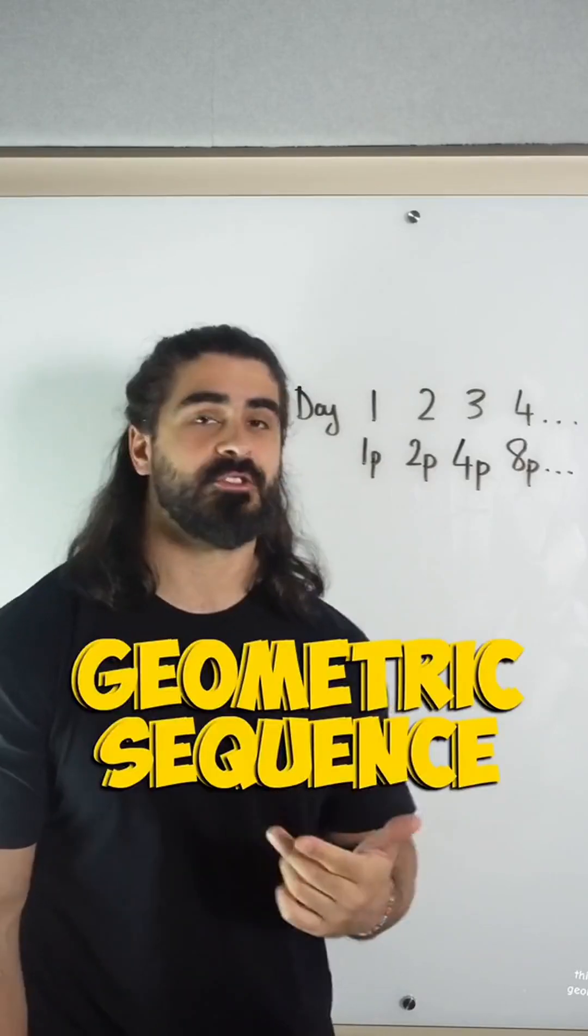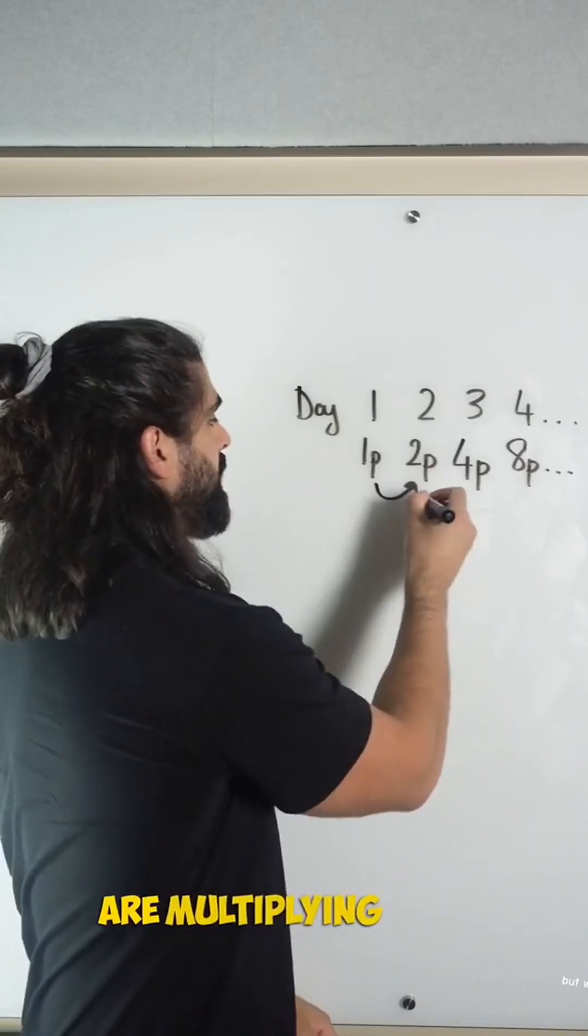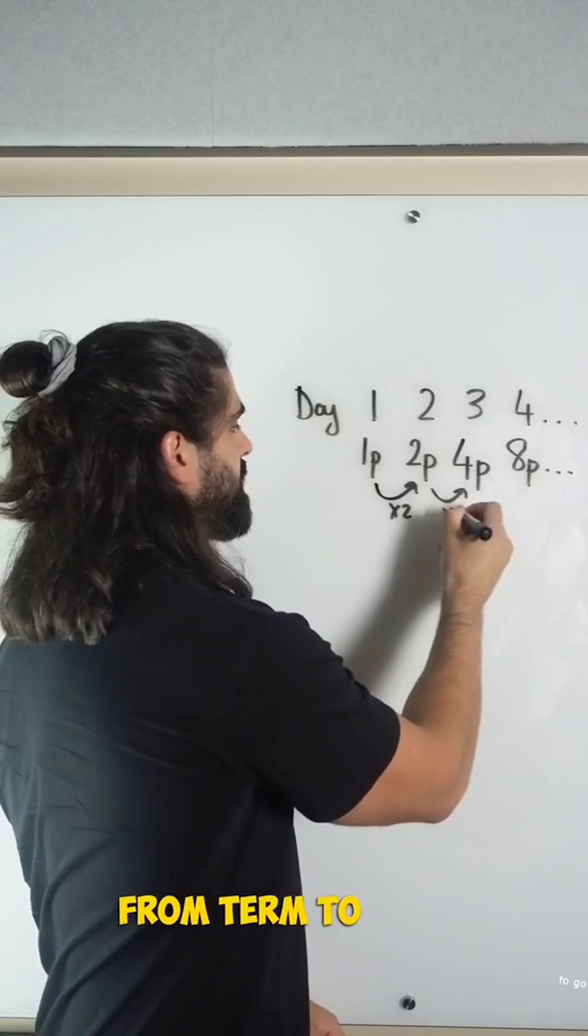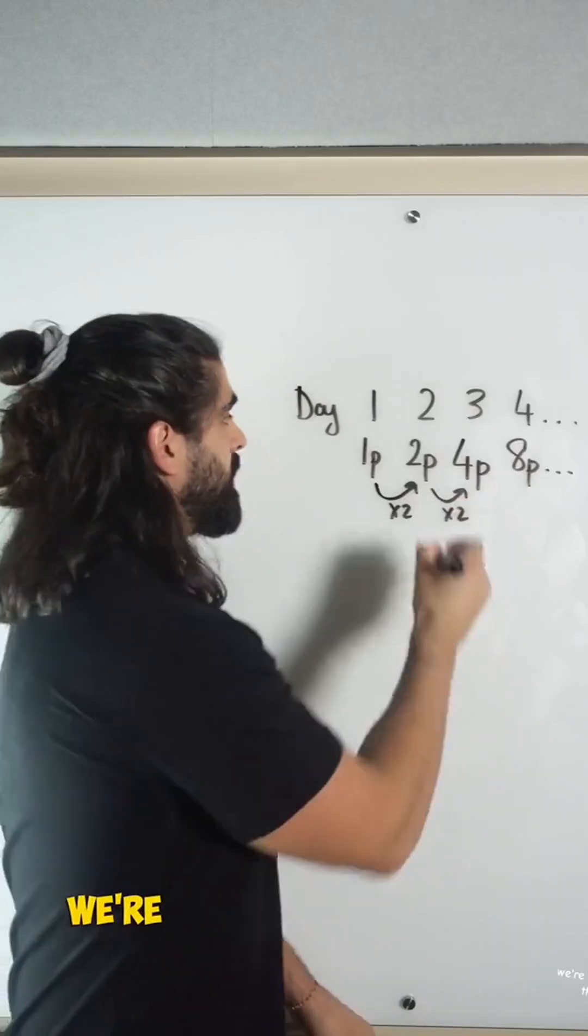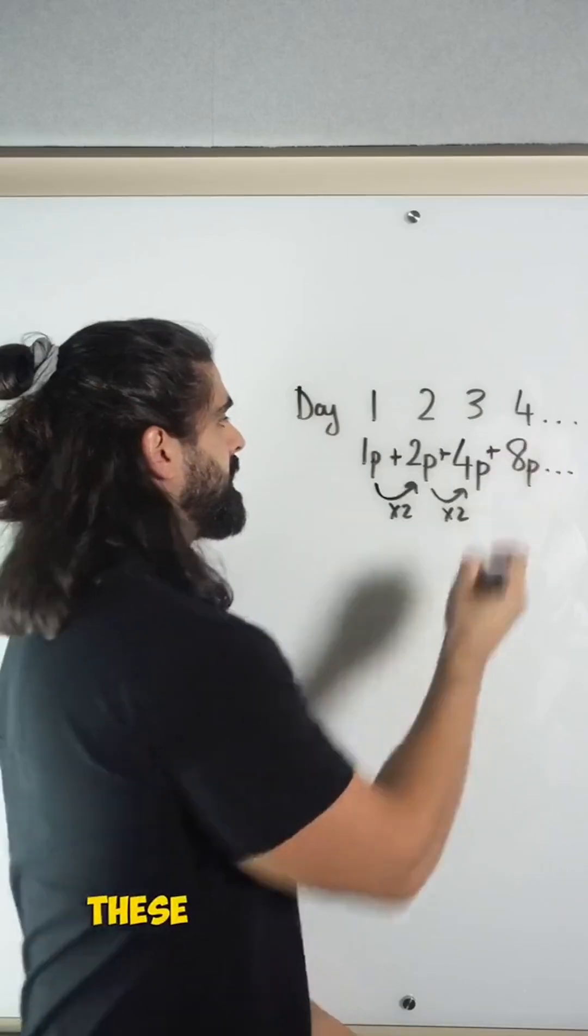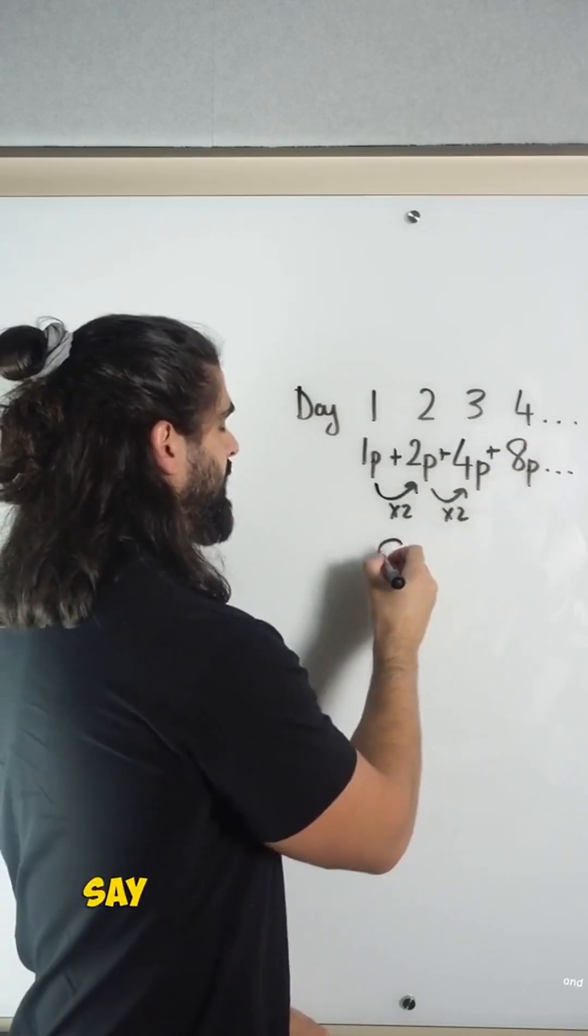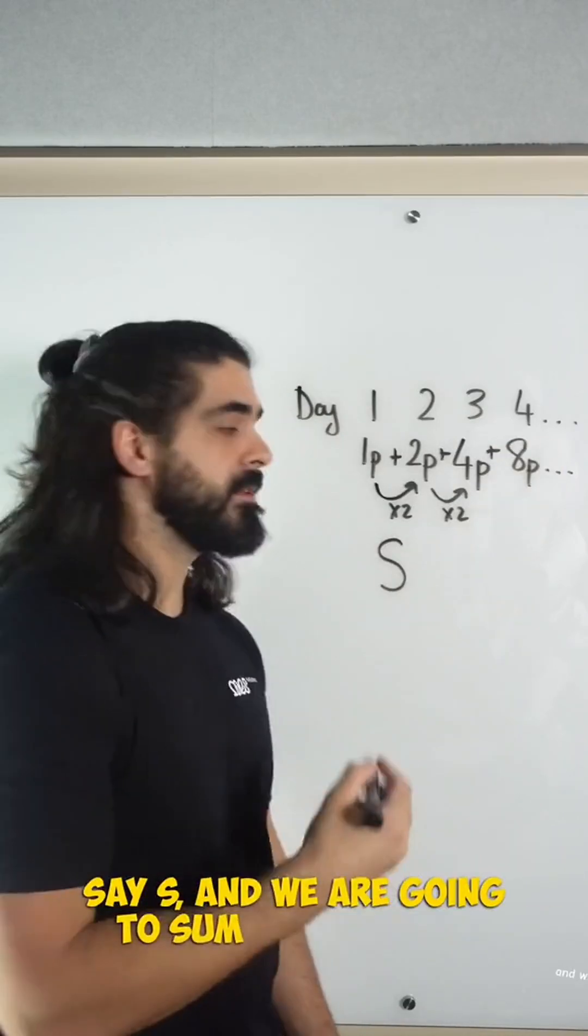This is known as a geometric sequence where we are multiplying to go from term to term and there's a very simple formula for this. We're going to add all of these numbers and the sum we say s, and we are going to sum for 30 days.